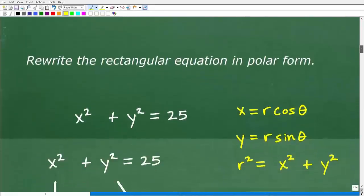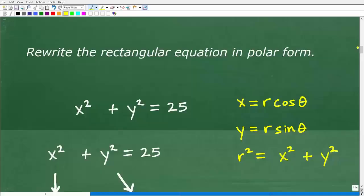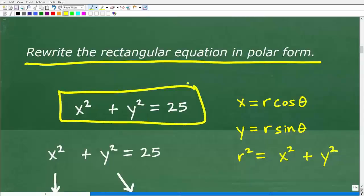So the typical type of question will be something like this. Rewrite the rectangular equation into polar form. All right. So this is our problem. We have x squared plus y squared is equal to 25.